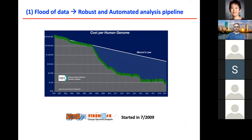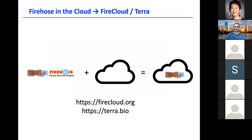The first challenge is the flood of data. Because of the drop in sequencing costs, the amount of data is increasing dramatically. We started developing in 2009 a system at the Broad Institute called Firehose to analyze the world's cancer genomics data. At some point, the computers at the Broad Institute were not large enough to handle all the data, so there was an effort together with the NCI to move these analysis pipelines to the cloud. We built FireCloud, which is now further expanded to a system called Terra. You're welcome to use them — many datasets and pipelines are available and can be run in the cloud.